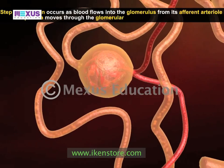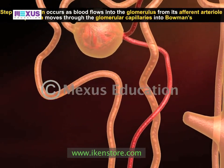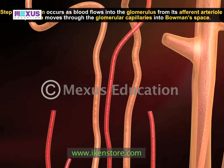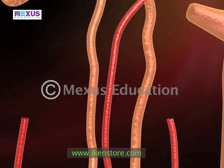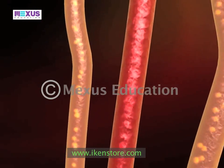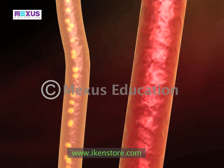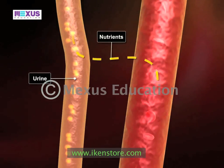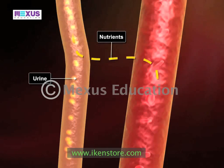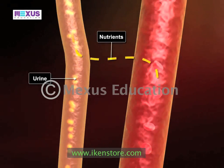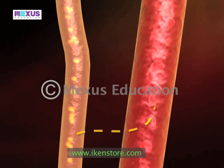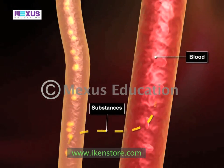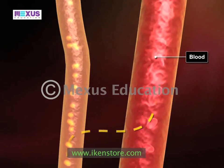The glomerular filtrate moves from Bowman's space into the tubule segments of the nephrons. Here, through tubular reabsorption, electrolytes and nutrients move from the filtrate back into the bloodstream. Through tubular secretion, substances move from the peritubular capillaries into the urine filtrate.